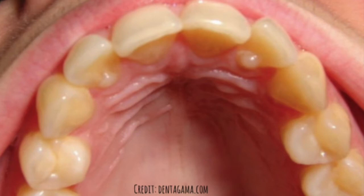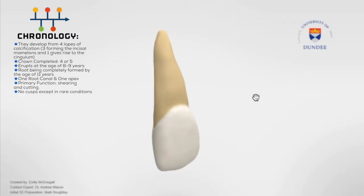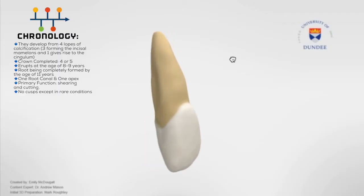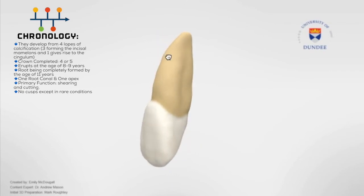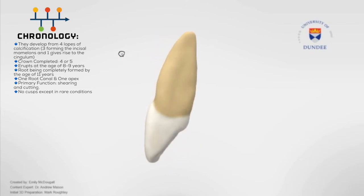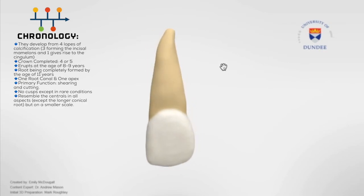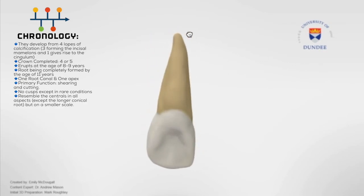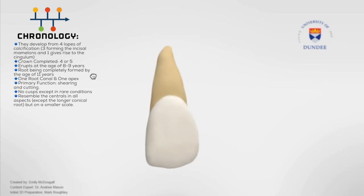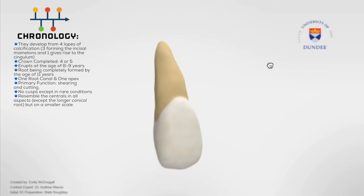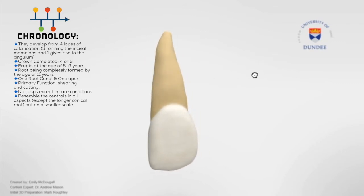This is a variation of dens invaginatus, which is an example of abnormalities in tooth formation, which will hopefully be looked at in more detail in videos in the future. The lateral incisors resemble the centrals in all aspects, except the longer conical root, but on a smaller scale.